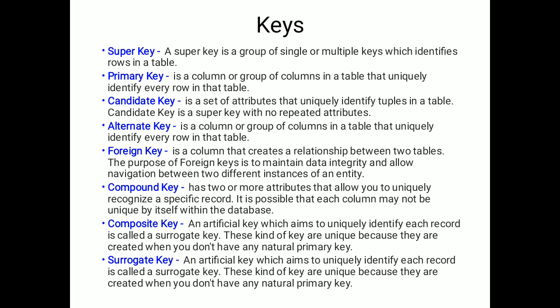Primary key is a column or group of columns in a table that uniquely identifies every row in that table. Whatever attribute uniquely identifies the record in the table is called the primary key. For example, in a database of students, the student roll number uniquely identifies each and every student, because in one classroom the roll number is not repeated.